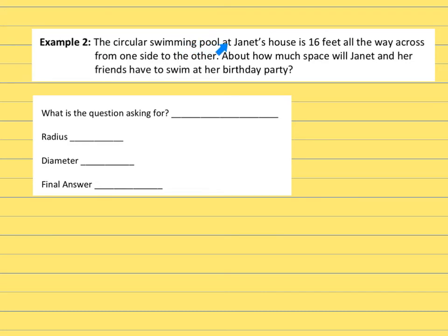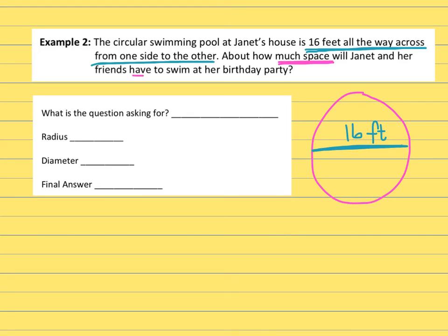Second example, the circular swimming pool at Janet's house is 16 feet all the way across from one side to the other. About how much space will Janet and her friends have to swim at her party? Again, since I like to see a picture of something, I'm going to draw a circular swimming pool. And this is telling me that it is 16 feet all the way across from one side to the other. All the way across from one side to the other is 16 feet. The question is asking for how much space will they have to swim? Well, the place you're going to swim is all on the inside. And then a clue word, how much space, that means area. Because you're going to swim on the inside of the pool.